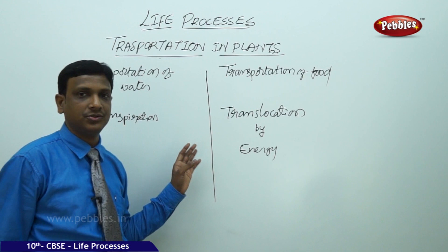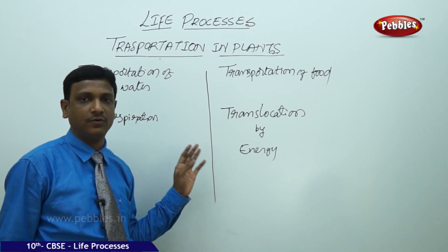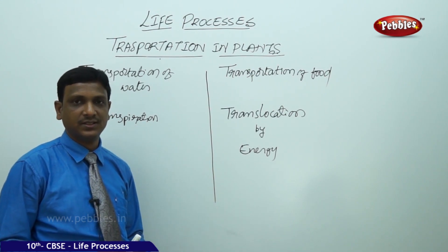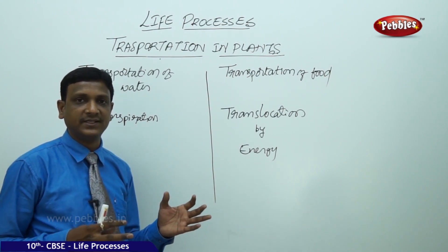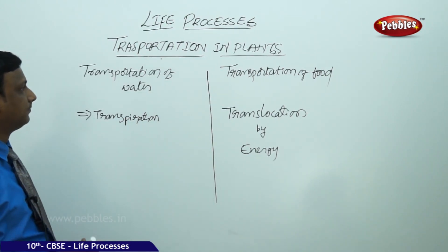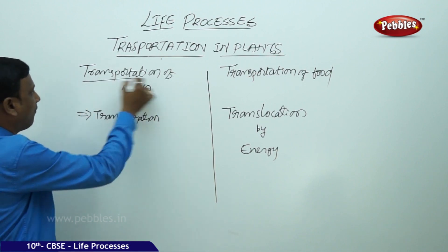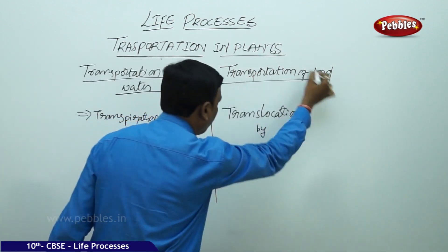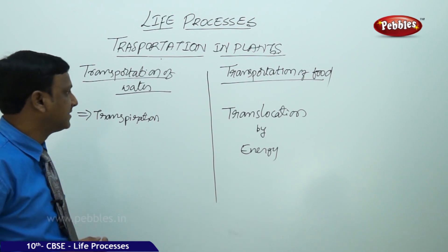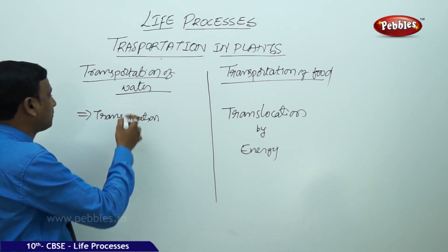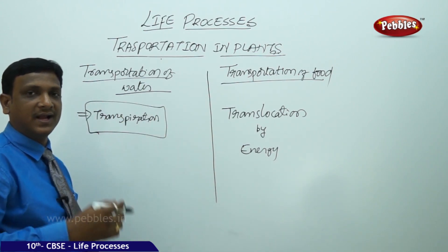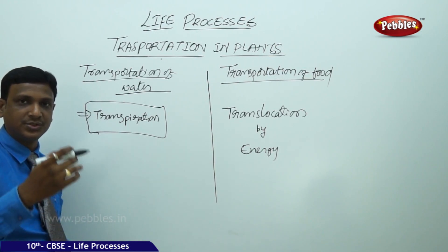In plants, there are tissues called xylem and phloem that help for transportation. But what are the driving forces? Xylem is responsible for the transportation of water. The transportation of water — what are the driving forces? Transpiration is the major process which makes the water flow in an upward direction, that is from the roots to the tip of the leaves.